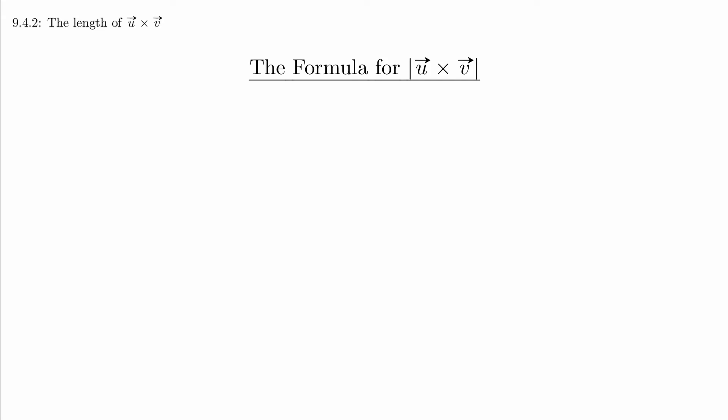The algebra for this is neither pretty nor insightful, but fortunately the book shows you all the steps. We're going to go straight to the result. The magnitude of u cross v is equal to the length of u times the length of v times the sine of the angle between them.